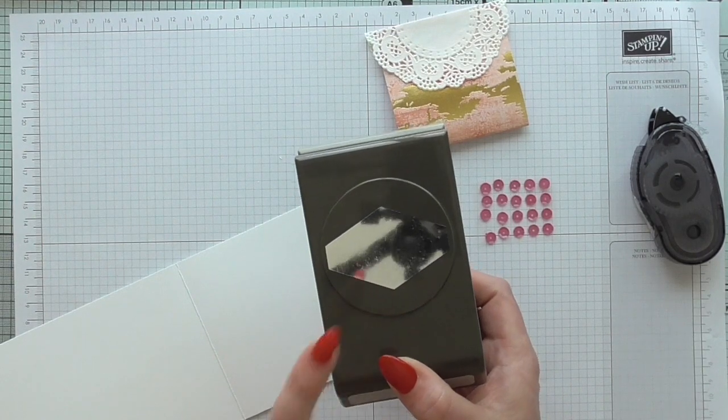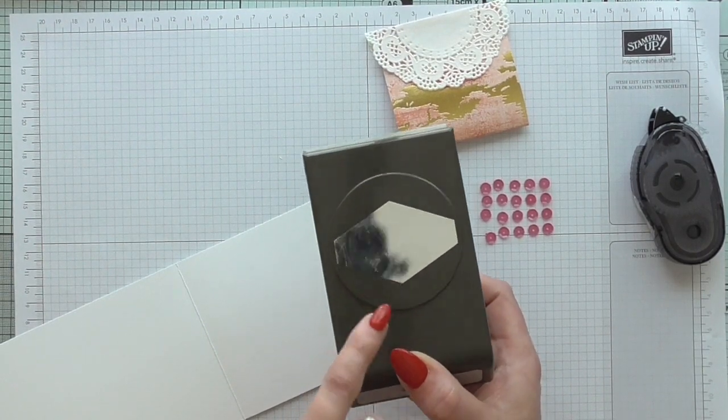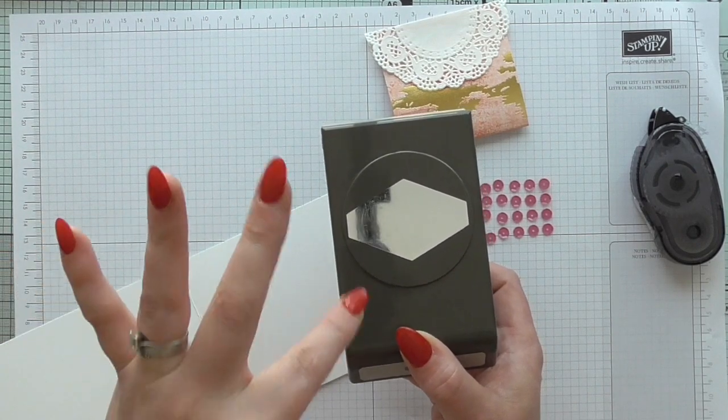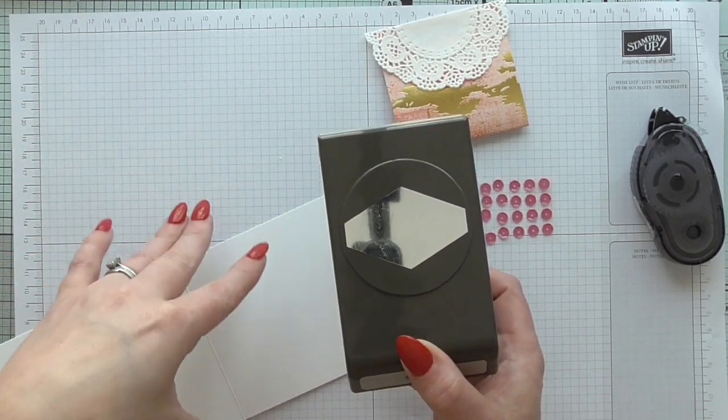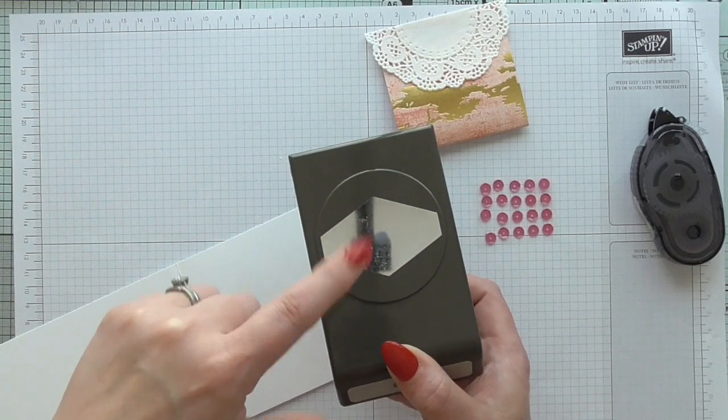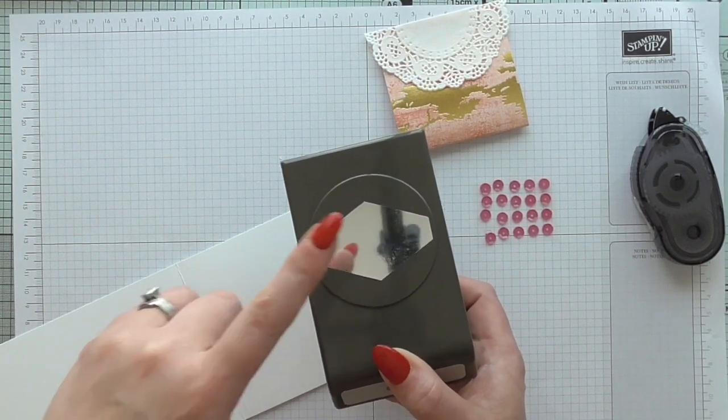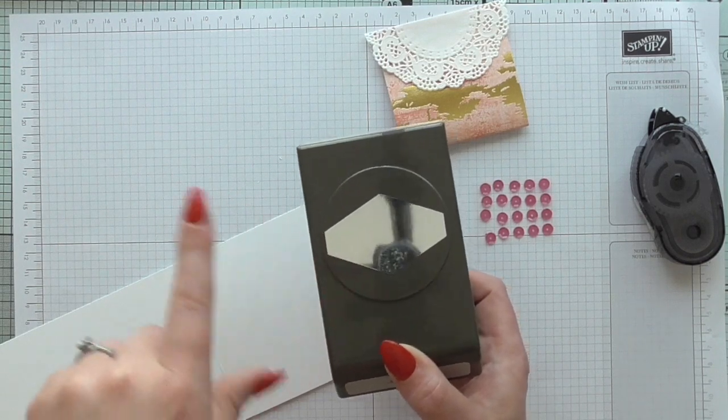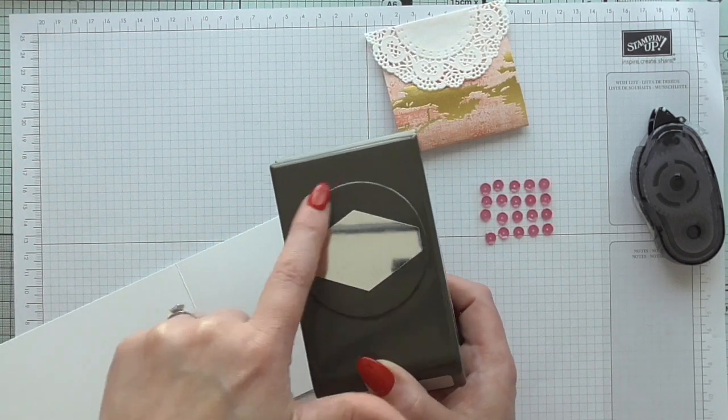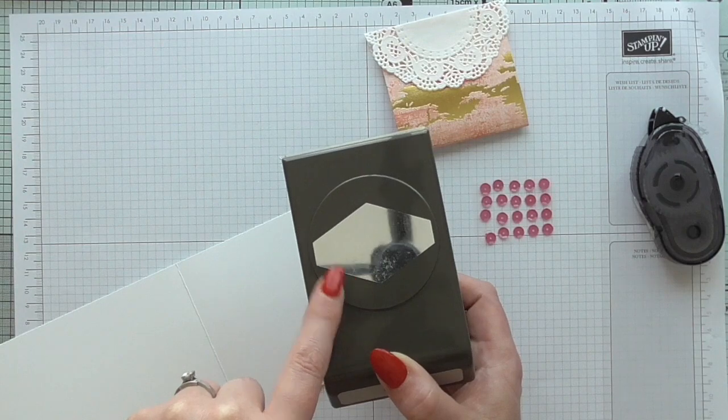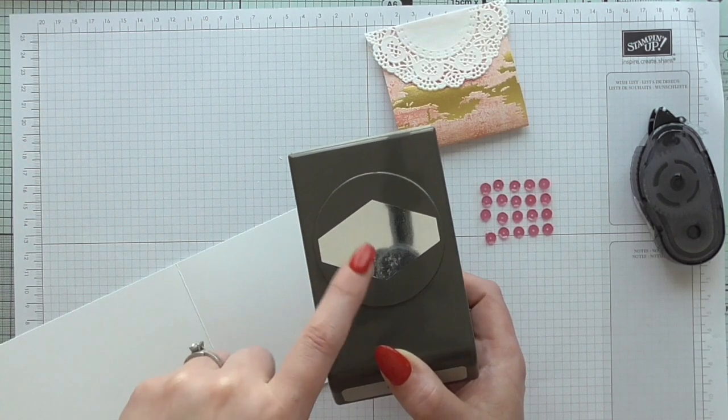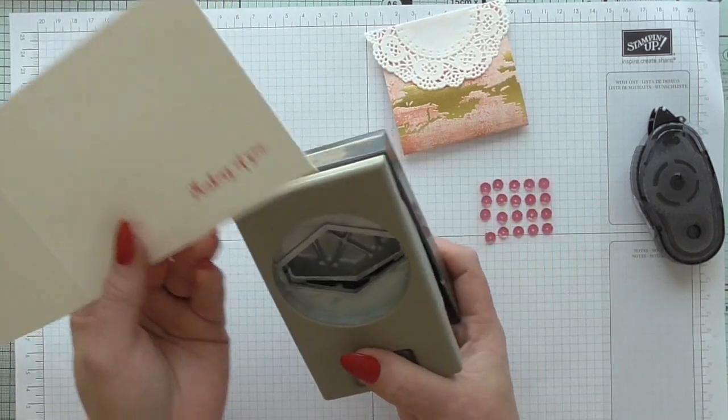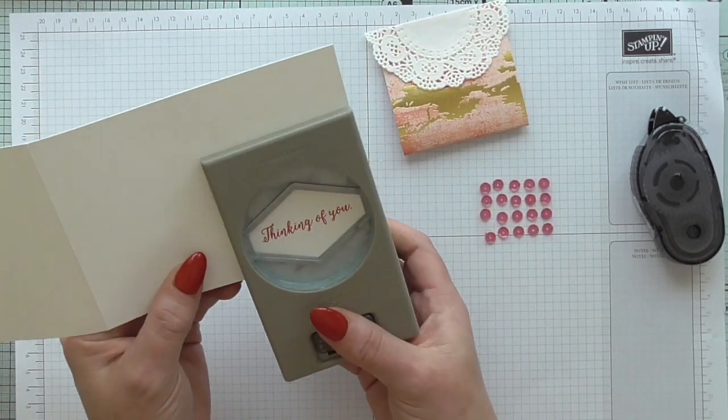And then I'm going to use my Tailored Tag punch. This is awesome, it's available in the spring summer catalog with the True Gentleman suite, which is the male-themed one, but it is carrying over. It's a good punch to get as well because I can give you a sneak peek. Well, a bit of sneak information: there is another stamp set that's going to coordinate with this punch in the new catalog, so it's worth getting. Don't tell anybody I told you.